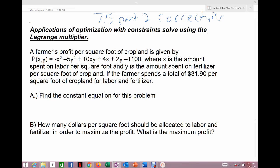So the constraint of the first part of this problem, this is the 7.5 part 2, the correction to the first problem. The constraint is still to say my x plus y has to equal $31.90.